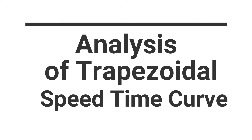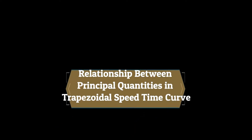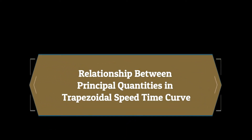In case of mainline service, we know that we have a certain speed-time curve. But when we try to establish the relationship between principal quantities, we have to use a simplified speed-time curve, and for the mainline service we use the trapezoidal type of speed-time curve. So first let us draw the trapezoidal speed-time curve.